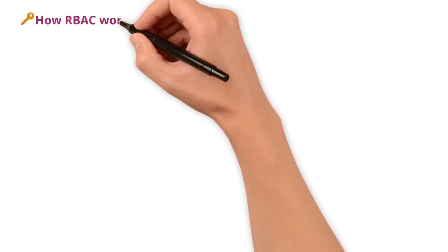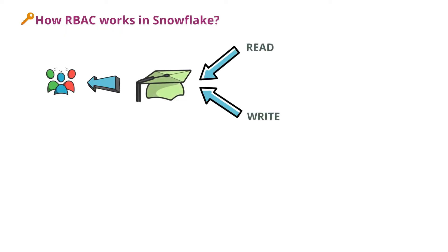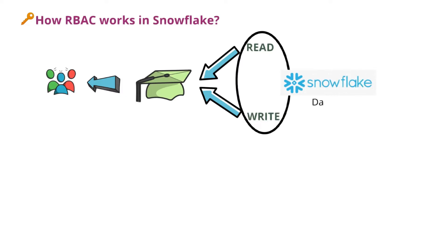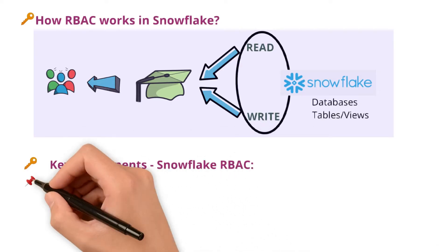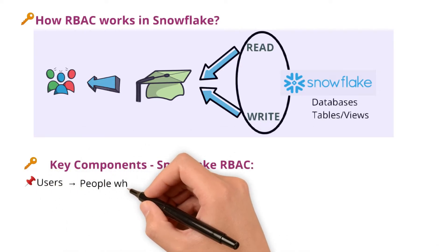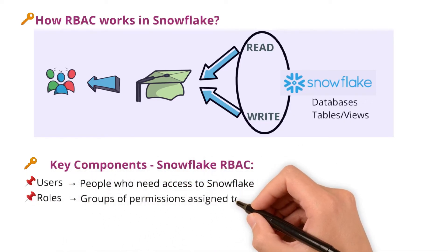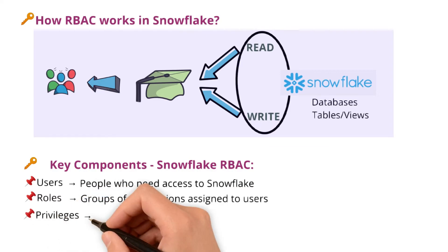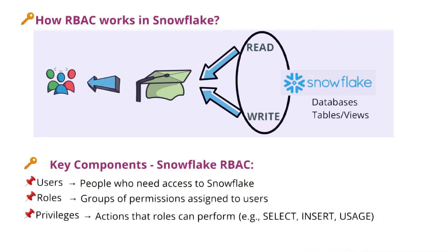Now, how does RBAC work in Snowflake? Users are assigned roles. Roles are assigned privileges. Privileges control access to Snowflake objects like databases, tables, views, etc. The key components of Snowflake RBAC are: users — people who need access to Snowflake; roles — groups of permissions assigned to users; and privileges — actions that roles can perform, for example select, insert, usage, etc.